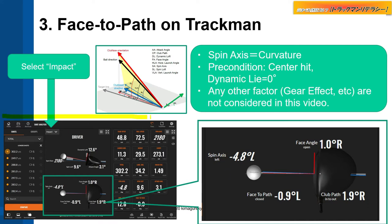Here is the TrackMan screen, and when you select Impact, you get this screen. In the lower part, we get the items about face-to-path.